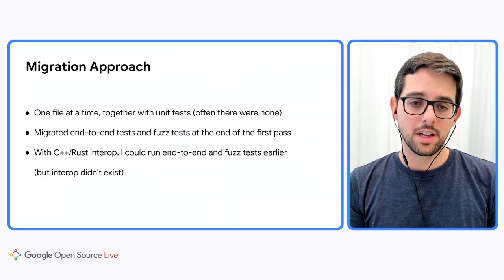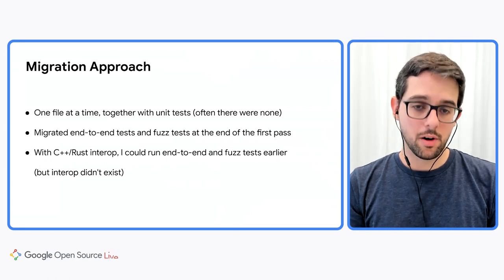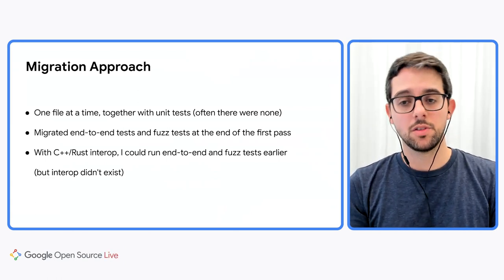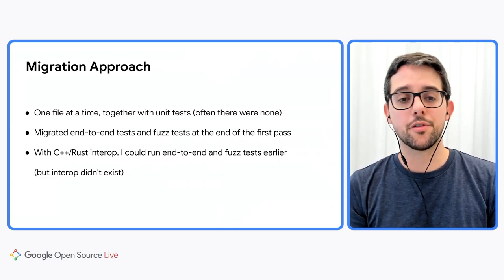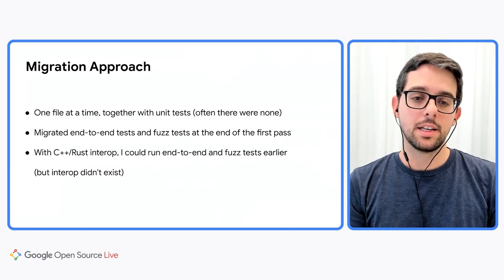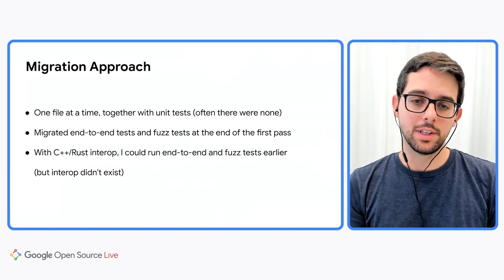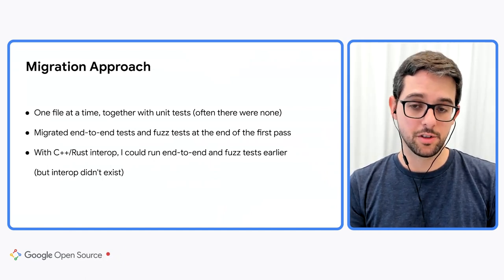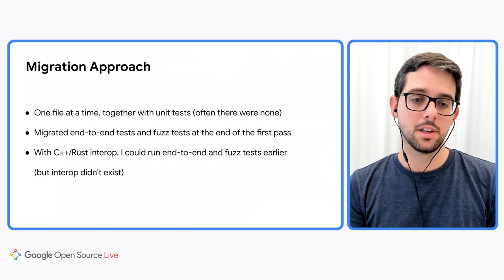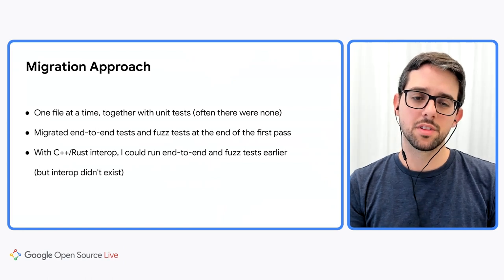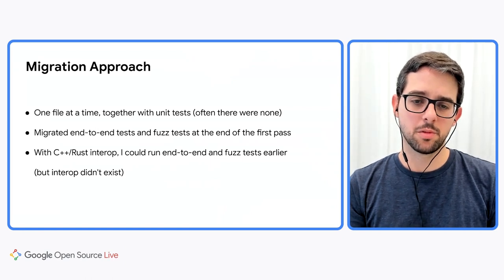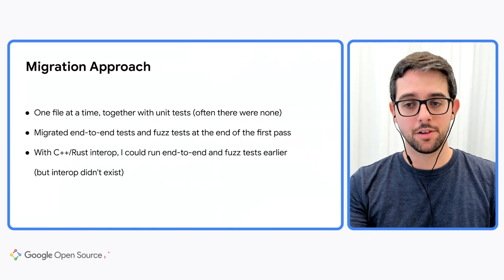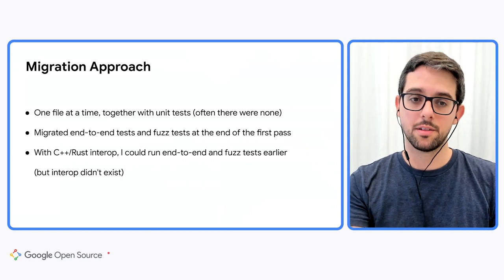In the first pass, I migrated one file at a time, together with any existing unit tests, but often there were none. I then migrated end-to-end tests and fuzz tests at the end of the first pass. Since there was no C++ Rust interop, I only ran end-to-end tests after I finished the first pass.